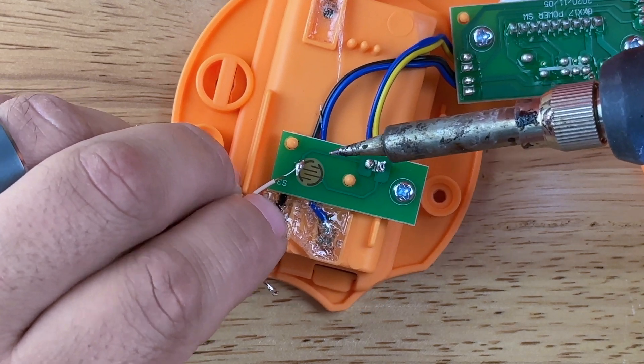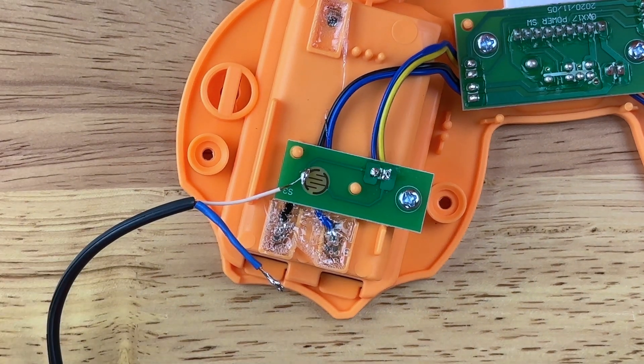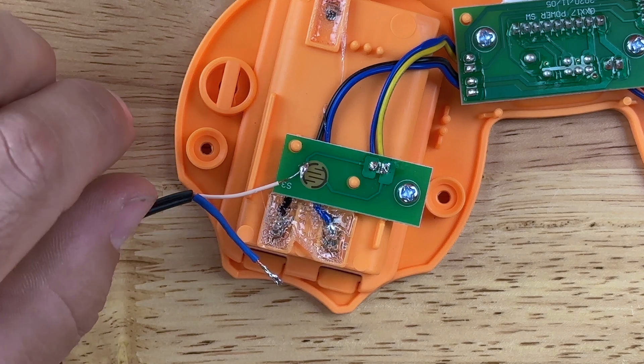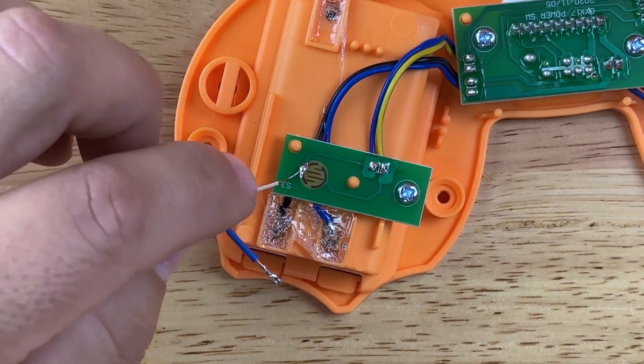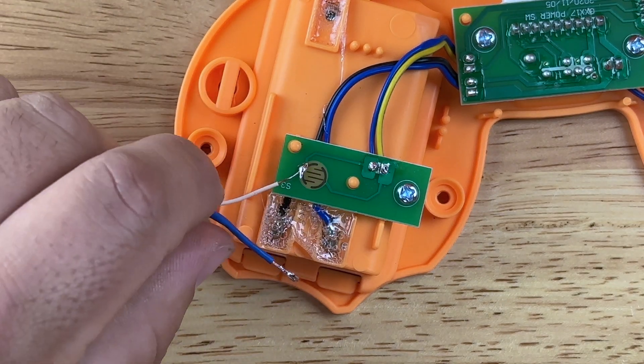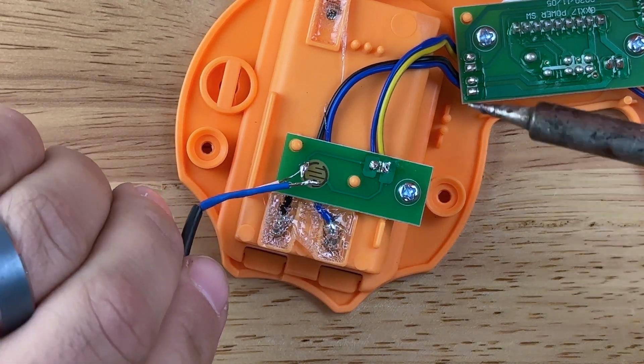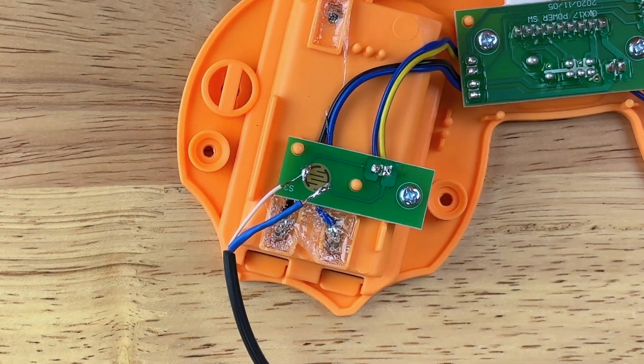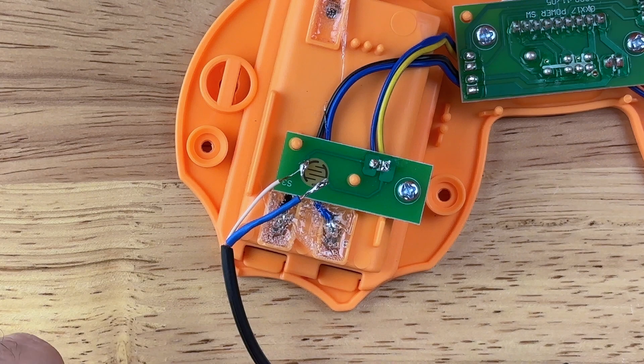And that's all it really takes to get that on there. Now one thing I didn't use is some flux. Flux basically helps prevent the circuit board from burning up. I don't have any with me, but it's just a little pen you just kind of draw a little bit on that disc. I can do it quick enough that I'm not going to burn it, but it's a good idea to put a little flux on that disc.